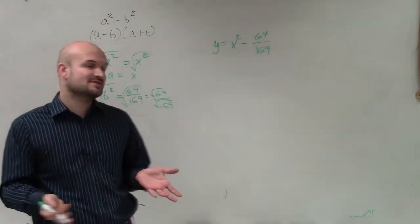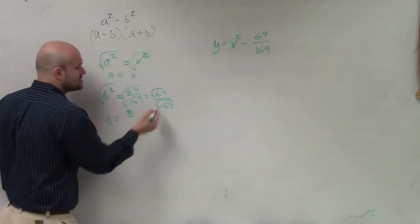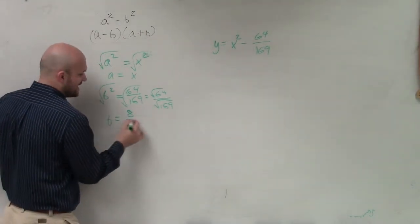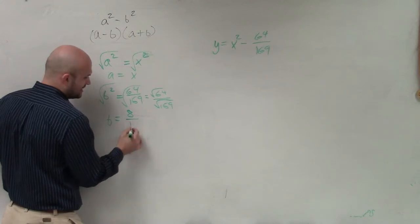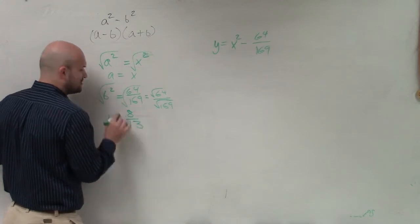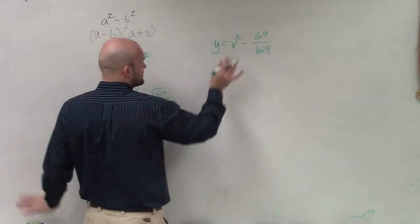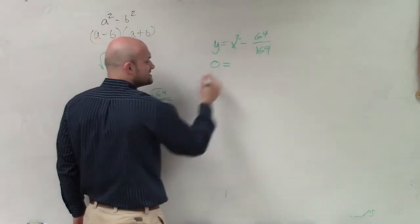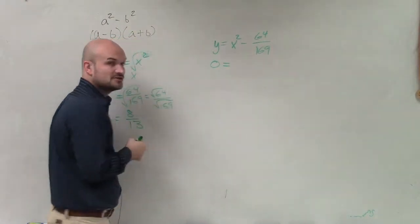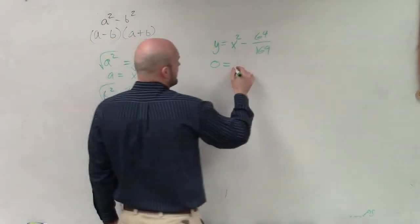So now I just need to determine: what is the square root of 64? That's 8. And what's the square root of 169? That's going to be 13. So therefore, b equals 8 over 13. Now I can factor this. Since I'm solving by factoring, I'm going to set it equal to 0 so I can apply the zero product property.